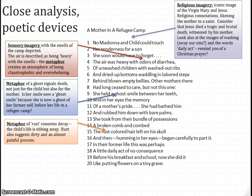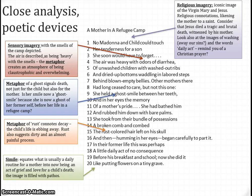We then get another metaphor — one of the most powerful in the poem. The 'rust-coloured hair on his skull,' and then 'humming in her eyes.' The metaphor of rust connotes decay; the child's life appears to be ebbing away, even the hair is being lost from his skull. Rust also suggests quite a painful process — something dirty and difficult. Is this reflecting the child's experience? The simile 'like putting flowers on a tiny grave' equates what is usually a daily routine for a mother into an act of grief and love for a child's death. This image is filled with pathos, which means incredible sadness.